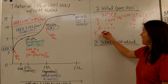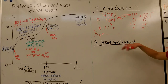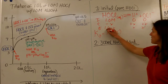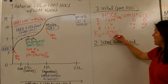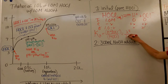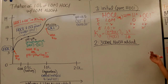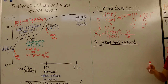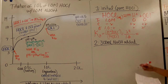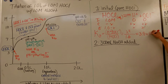You plug this into your Ka expression. Remember, any K expression is just products over reactants. In this case, my products are H⁺ and OCl⁻, and my reactant is HOCl. Plugging in the ICE chart values, I end up with X squared divided by 1. We leave off that minus X because our Ka value is pretty small, so X will be pretty small — 1 minus X is essentially just 1. The Ka value is given in the problem; in this case, Ka equals 3.5 times 10 to the negative 8th.